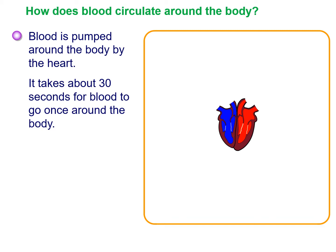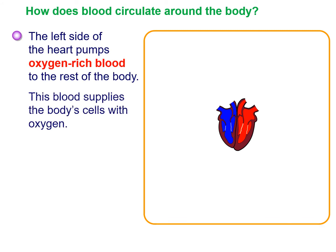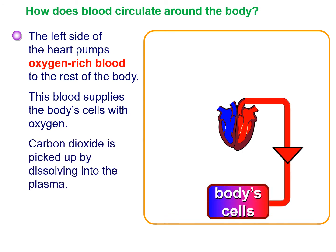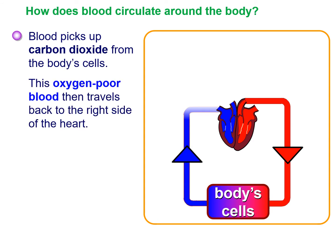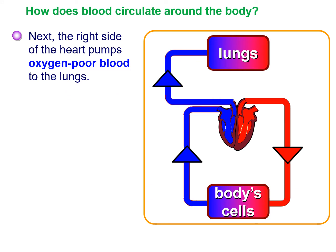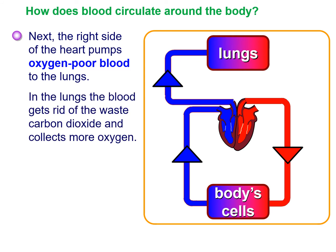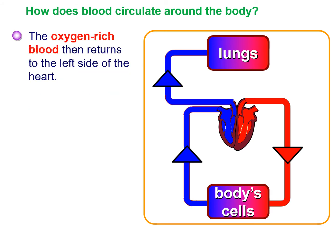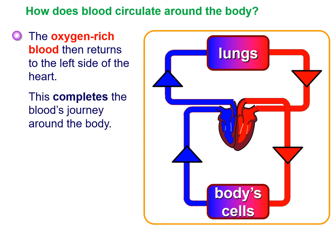Blood is pumped around the body by the heart, and it takes about 30 seconds for blood to go once around the body and back to the heart again. Blood travelling back up to the heart against gravity enters the heart on the right side. This blood needs to lose carbon dioxide and pick up more oxygen, so it travels to the lungs. In the lungs, the blood gets rid of waste carbon dioxide, collects oxygen, and changes to oxygen-rich blood to go back to the heart, entering on the left side — that is one complete journey.